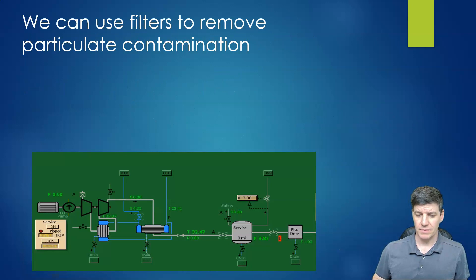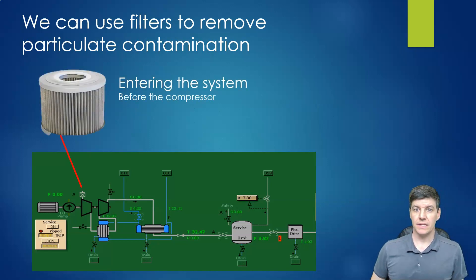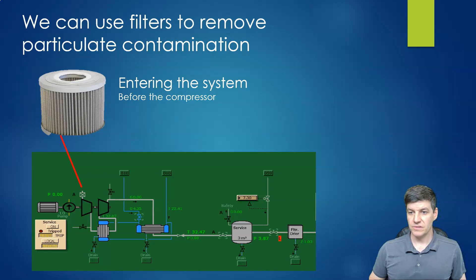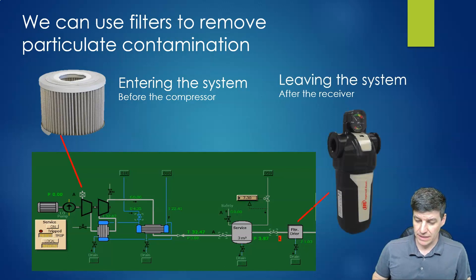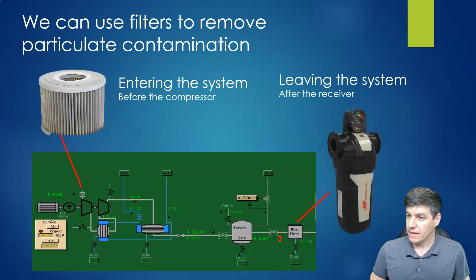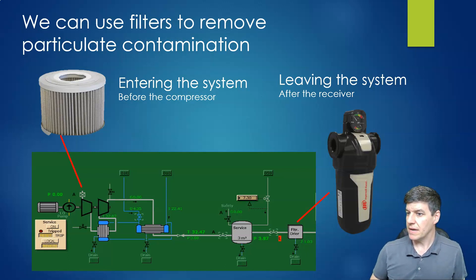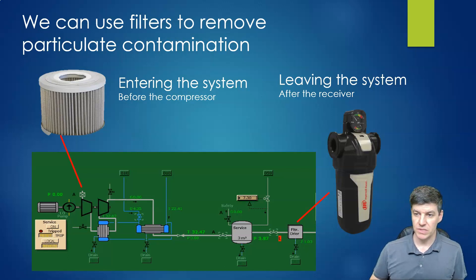Let's look at common ways in our system to remove particulates — dirt. First, on the inlet to our air compressors, we have a filter — some sort of barrier that prevents dirt from getting in, shown as a box with a little X on it. We also have a filter dryer later in the system. The filter has to be able to withstand high pressures, so it's a more robust canister. Filters protect all downstream components from dirt and other contaminants.